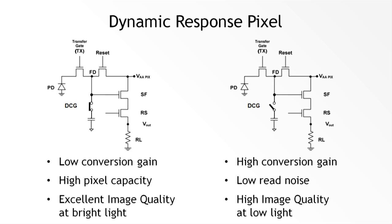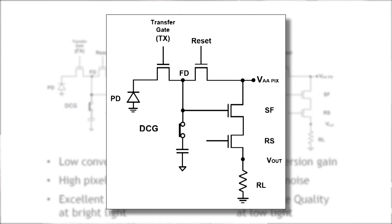What we do is connect or disconnect a physical capacitance from the floating diffusion node using an additional switch. In low conversion gain mode, capacitance is connected to the floating diffusion — we have high pixel capacity and very good image quality at high light conditions. For high conversion gain mode, we disconnect the capacitance, giving the pixel low readout noise and high image quality at low light conditions.